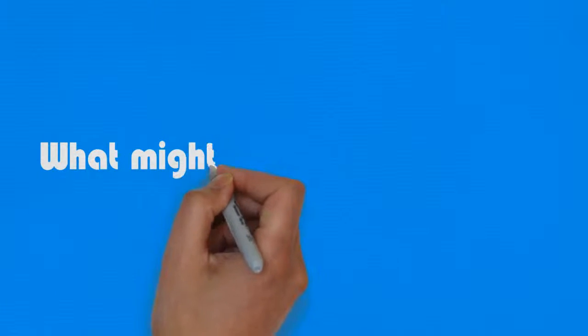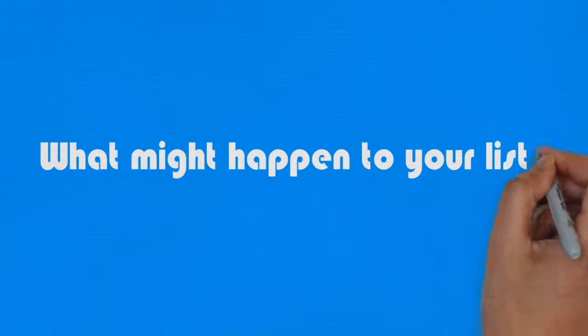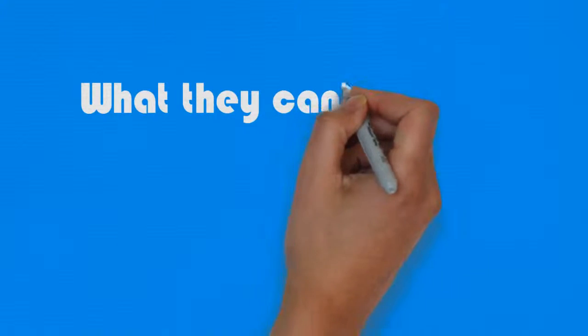Just pause the video here and think for a minute about what might happen with ageing to things on the list you created earlier. Quite often, I see people when the list of what they can't do has built up and up. Quite often, and I think quite sadly, they haven't replaced it with a list of what they can do.